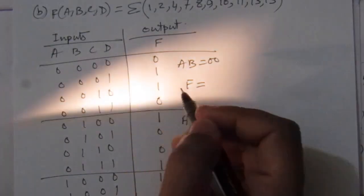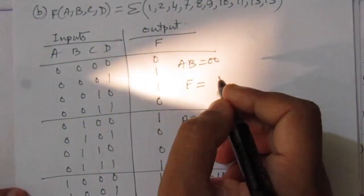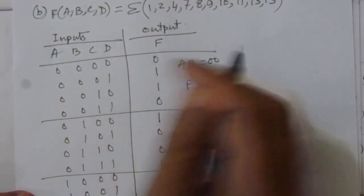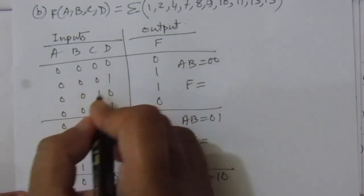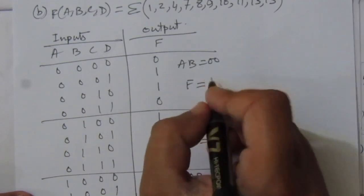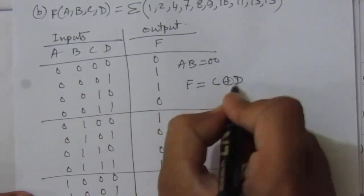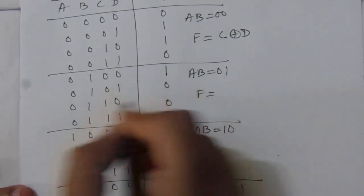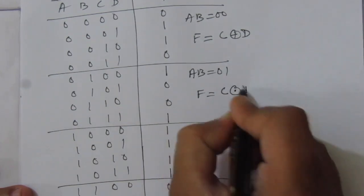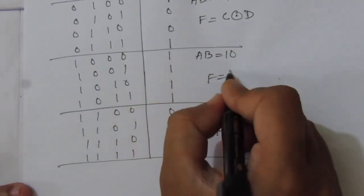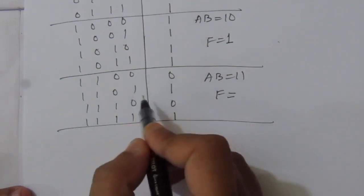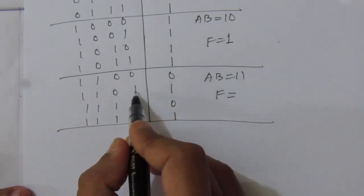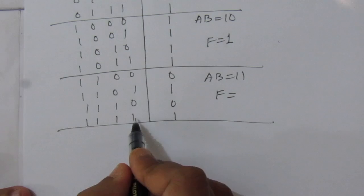Now let us express these outputs in terms of C and D. In the first case, this is 0, 1, 1, 0 — this is the XOR operation between C and D — so C XOR D. For the next case, we have 1, 0, 0, 1 — this is also an XNOR operation — so C XNOR D. In the third case, all the outputs are 1, so F equal to 1. In the fourth case, it is the same as D: whenever D is 0 F is 0, whenever D is 1 F is 1, so we write F equal to D.